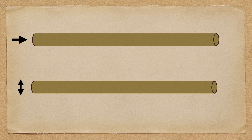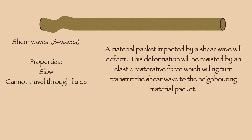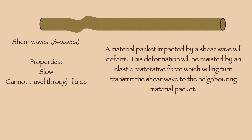The former are called pressure or compressional waves, and we discussed them in the last episode. The latter are shear waves, or S-waves, and they're going to be the focus of our discussion today. In essence, shear waves propagate by shaking the cylinder up and down, sort of like a wave propagating along a rope when you shake the end up and down.